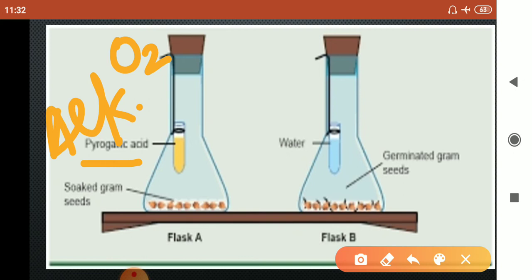Now this alkaline pyrogallic acid will absorb all the oxygen present in this flask because we have sealed it with a cork. So as it will absorb all the oxygen, the seeds will not get oxygen and...